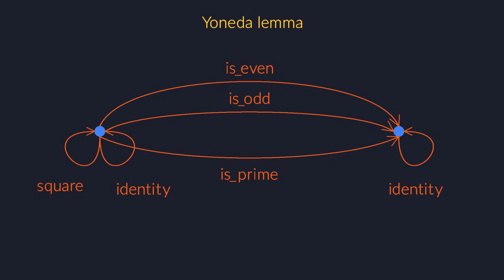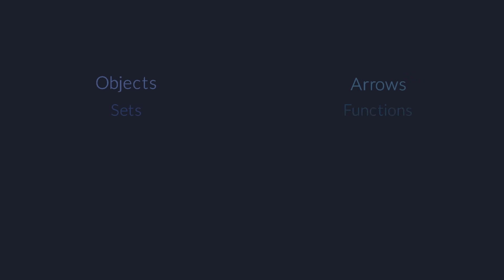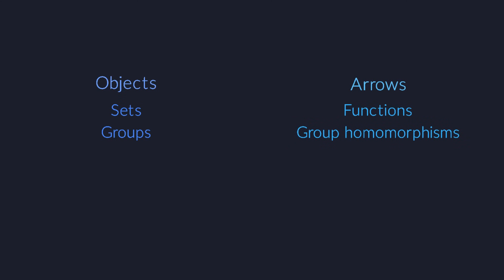Anyway, this is what a category looks like: a bunch of objects with arrows between them. When the objects are sets, the arrows are functions between those sets. When the objects are groups, the arrows have to be group homomorphisms.